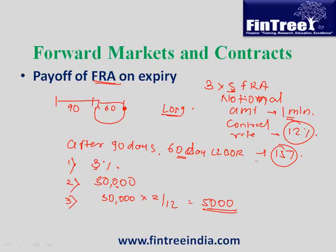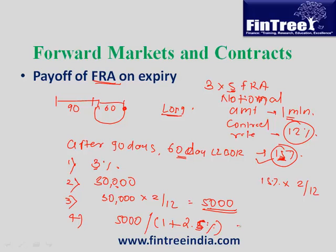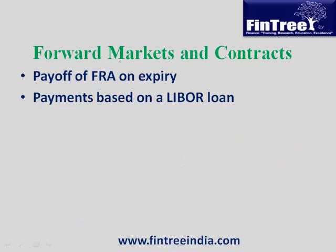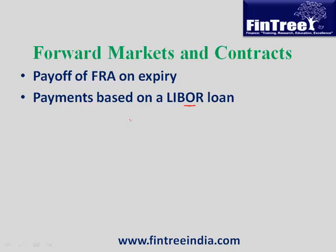In step four, we discount 5,000 at the current market rate: 5,000 divided by (1 + 15% × 60/360), which gives us approximately 4,877. That is how the payoff for forward markets can be calculated. Next: payments based on a LIBOR loan.